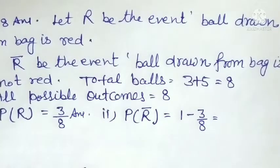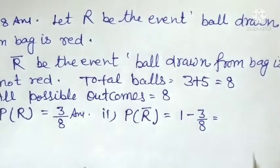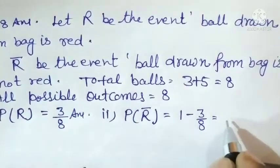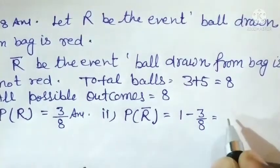P(R complement) — probability of not red — is equal to 1 minus 3 upon 8, which gives 5/8.